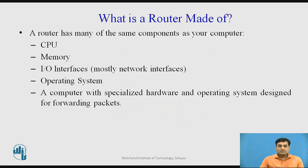What is a router made of? A router has many of the same components as a computer. It has a CPU, memory, and input-output interfaces — mostly network interfaces. Beyond these, some administrative interfaces are also present, along with an operating system. A router is essentially a small computer with specialized hardware and an operating system specially designed for forwarding packets through a network.